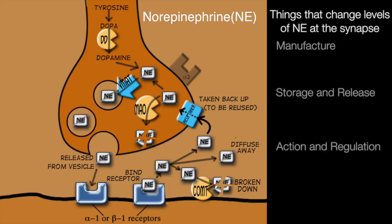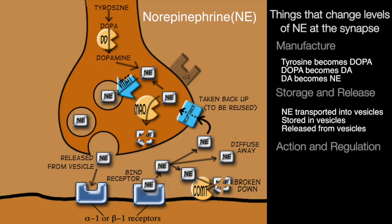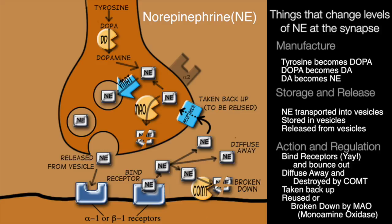Tyrosine is converted to dopa, which is then converted to dopamine. Dopamine is its own neurotransmitter — if you use it IV, it binds beta-1 receptors in the heart. Dopa turns to dopamine, which is then converted to norepinephrine, which is then transferred into vesicles. The vesicles sit inside the cell, then they are released, at which point they have the opportunity to bind receptors, bounce off, bind, bounce off.